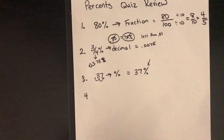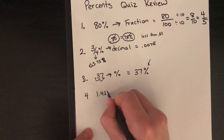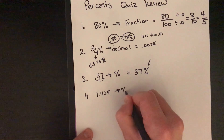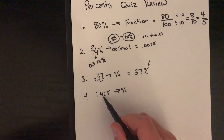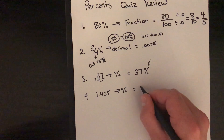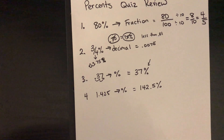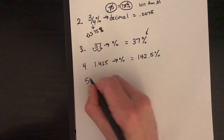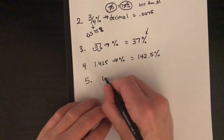The answer to question 3 is 37%. Number 4: convert 1.425 to a percent. We multiply by 100, moving the decimal point two spaces to the right — it ends up between the 2 and the 5 — giving us 142.5%.